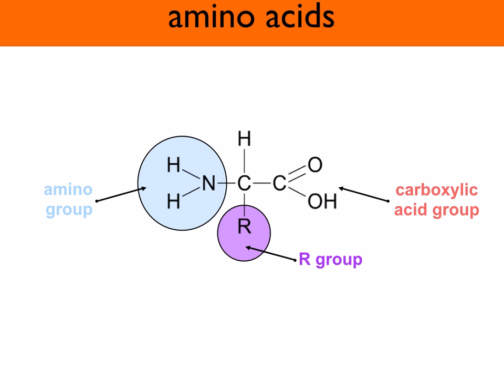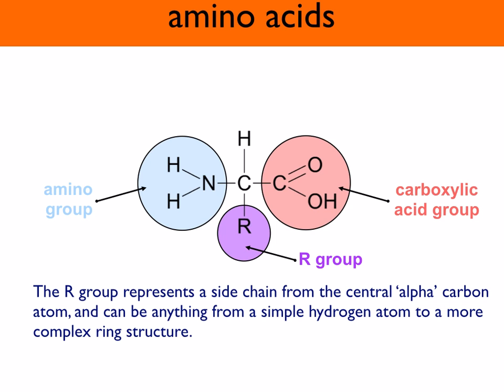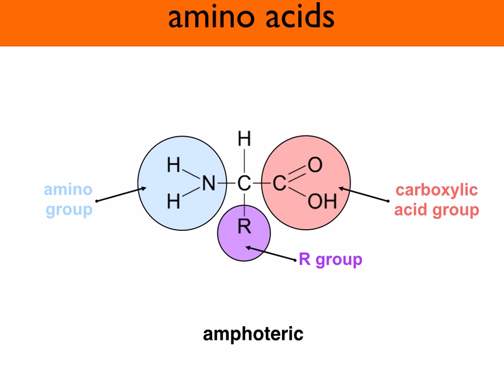You've also got the R group and the carboxylic acid group, which is an acidic group giving the amino acid the rest of its name. The R group represents a side chain from the central alpha carbon atom and it can be anything from a simple hydrogen atom to a more complex ring structure. Amino acids are described as amphoteric because the carboxyl group is acidic and the amino group is basic, so the amino acid is both an acid and a base.